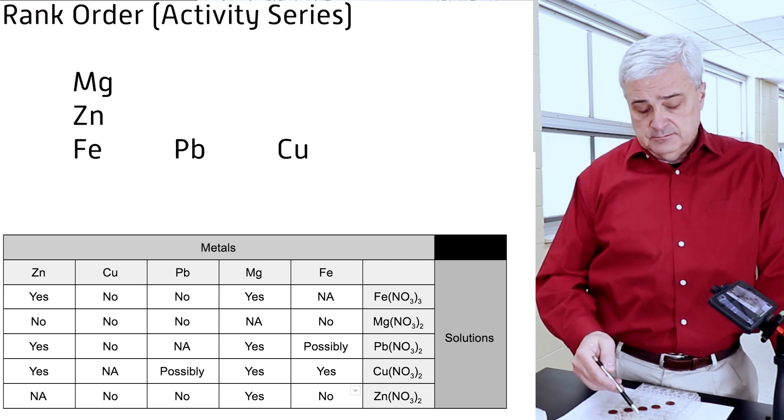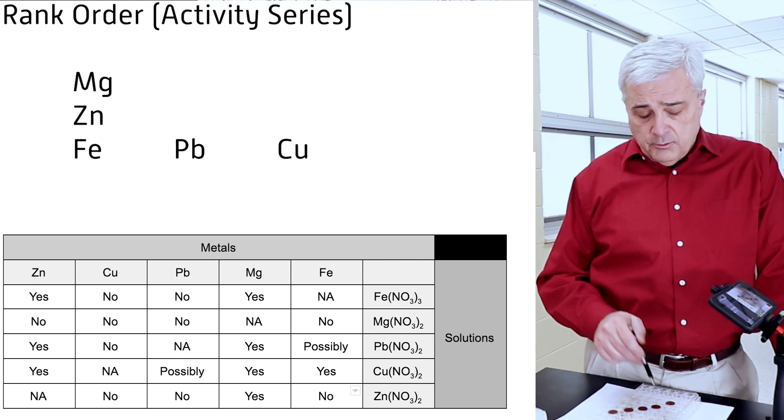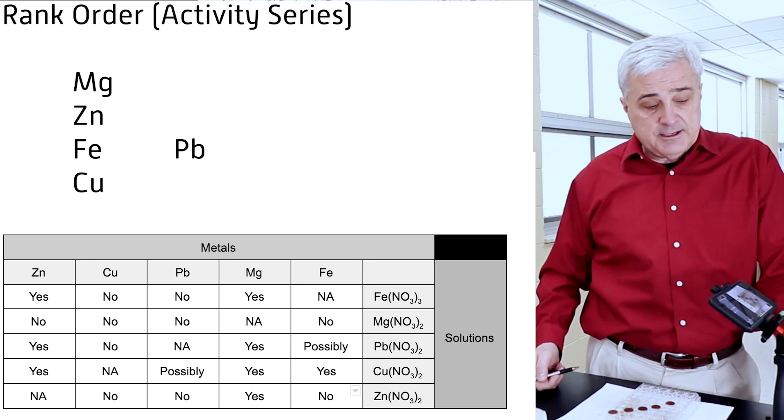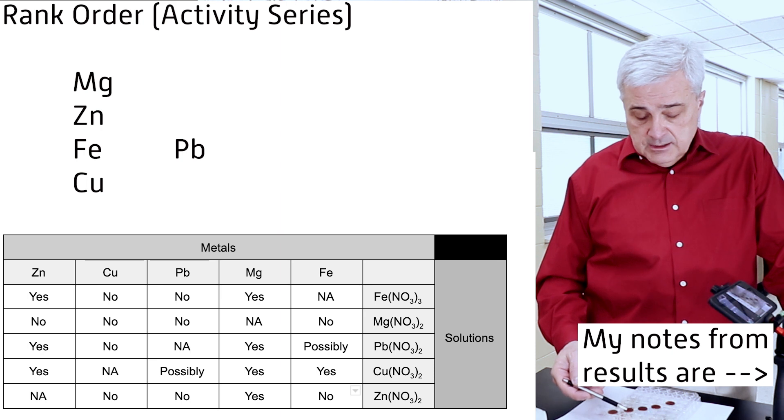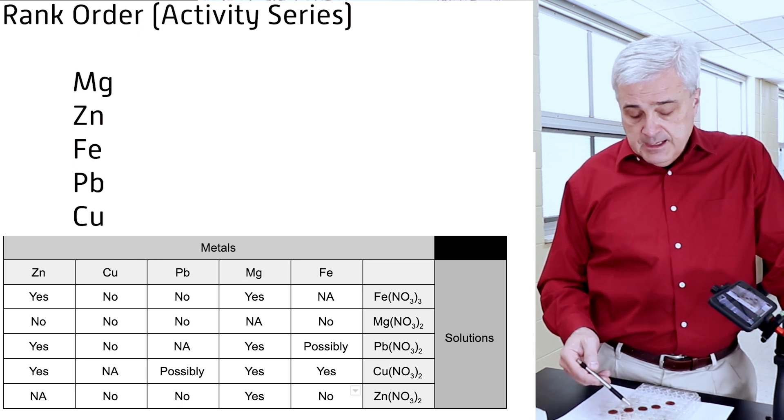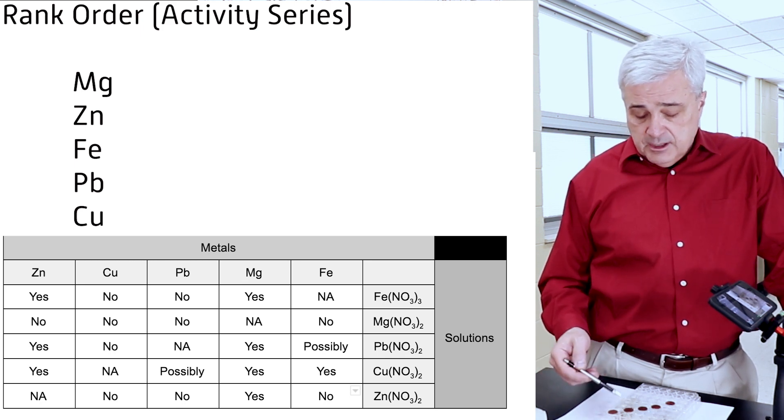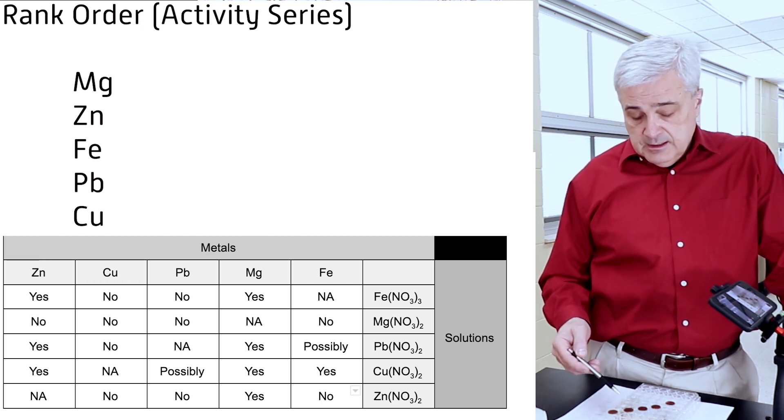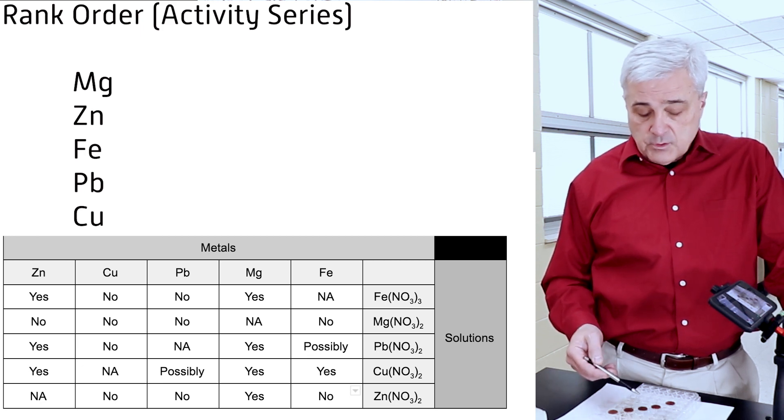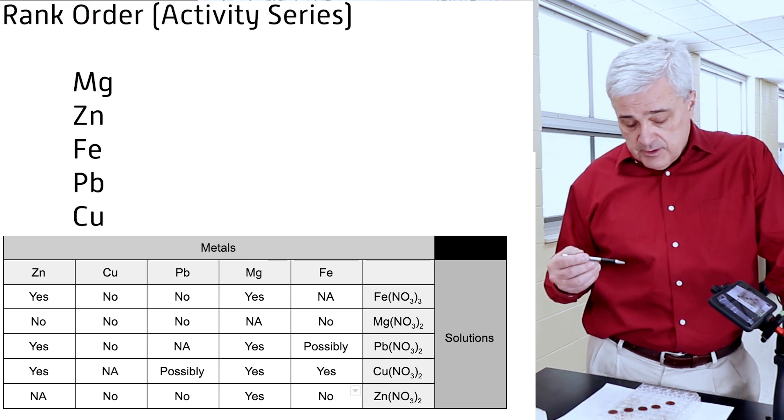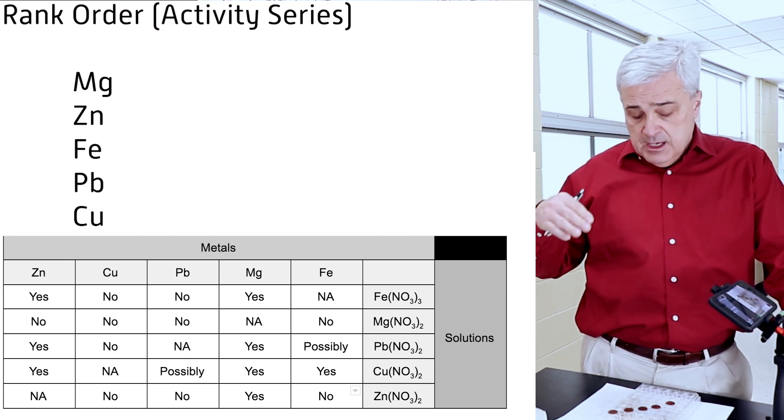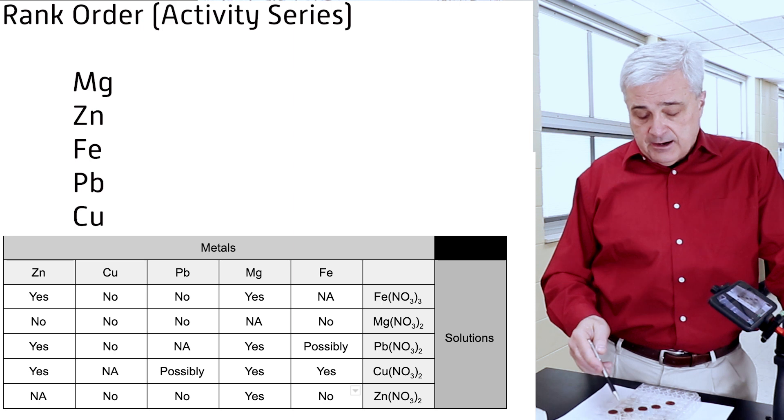Copper didn't replace anybody. None of the copper, none of the wells in copper indicated anything. So copper is at the bottom of our list. Of these five things, copper goes to the bottom. Did lead replace iron? No. So iron is above lead. Did lead replace magnesium? No. So iron is below magnesium. Did lead replace copper? We said it did. We've already got that copper on the bottom. And did lead replace zinc? And we said no. So zinc is above lead in our activity series.